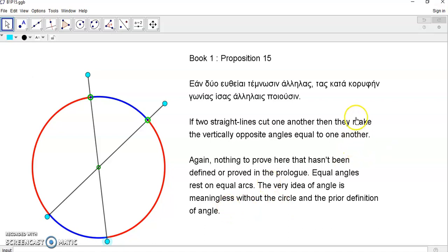And the very idea of an angle is meaningless without the circle and the prior definition of angle, which happens during the five requirements. You can't say all right angles are equal if you haven't even defined angle. So, we know that the definition, the primitive definition of angle is the ratio of the arc length to the radius of any particular angle.